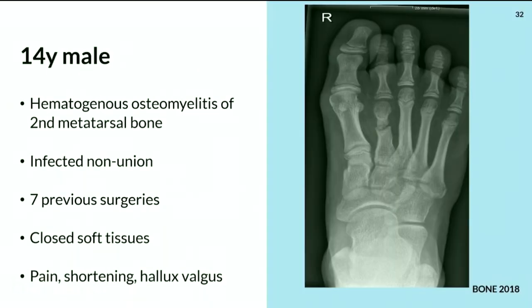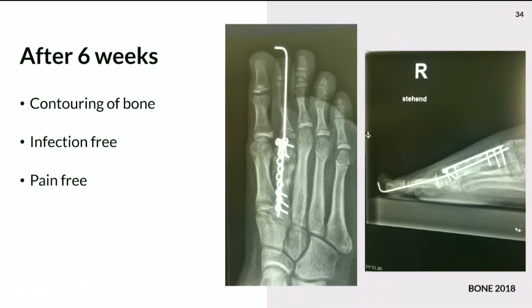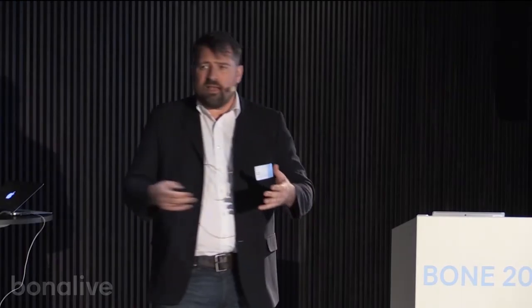Another case: chronic hematogenous osteomyelitis of the metatarsal bone with several prior operations, a closed wound with good soft tissues, and bone shortening. This was treated by filling the defect, plating, and transient wiring. This is a very new case — only a six-week follow-up — but contouring looks good, the patient is partial weight-bearing, and doing okay.